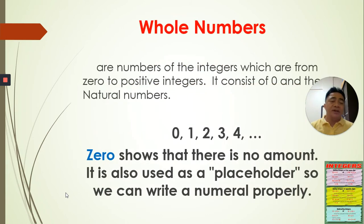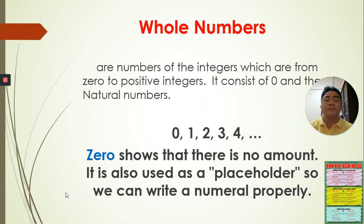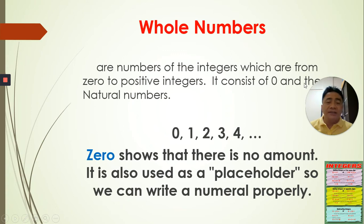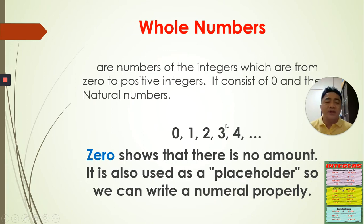Today's lesson is about whole numbers. If you have your book, you can follow along because we are just following the book. Whole numbers are integers from zero to positive integers. It consists of zero and the natural numbers — the family or elements of whole numbers — starting always with zero, then one, two, three, four, up to infinity. These are the zero integer and the positive integers.